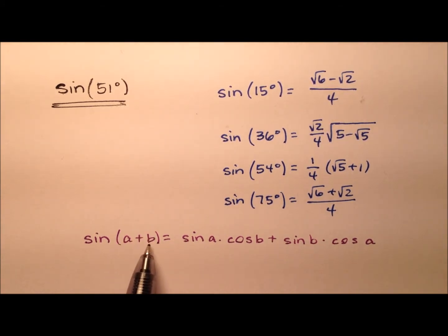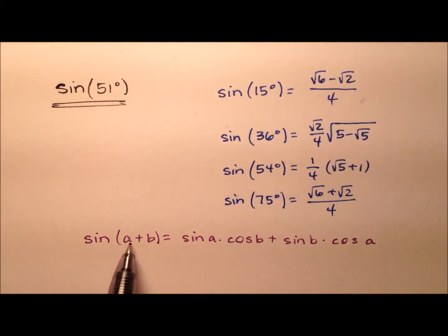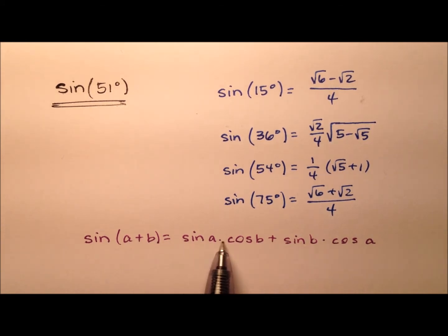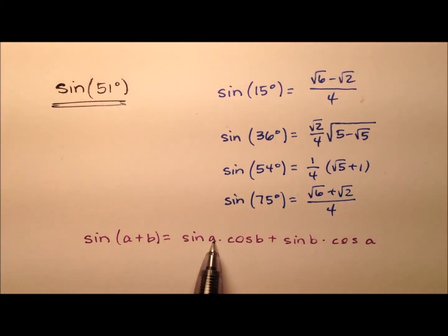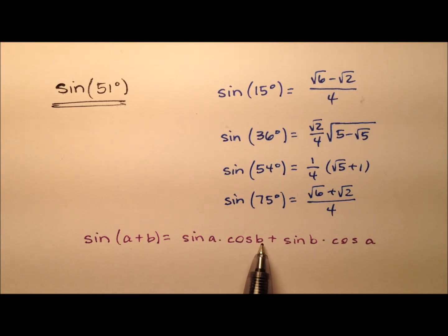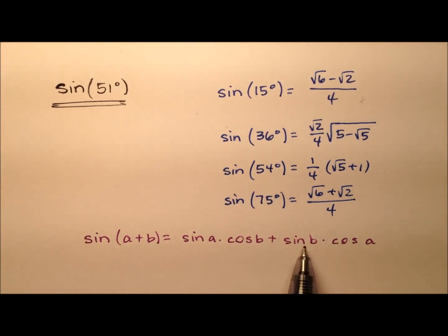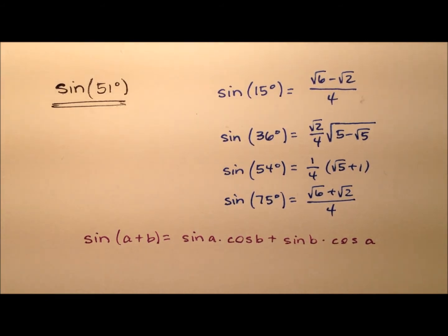So we have the sine of two angles that are being added together, a and b, and that can be expressed as the sine of a, the first angle, times the cosine of b, the second angle, plus the sine of b times the cosine of a.